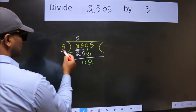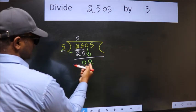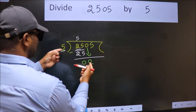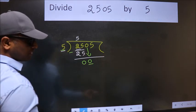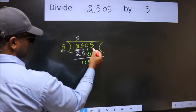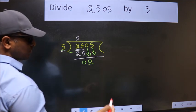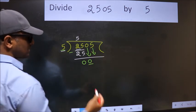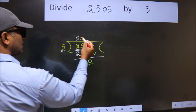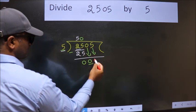Now here we have 0, here 5. 0 is smaller than 5. So we should bring down the second number. And the rule to bring down second number is put 0 here. Then only we can bring down this number.